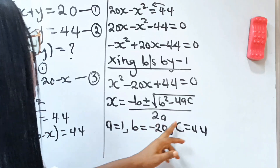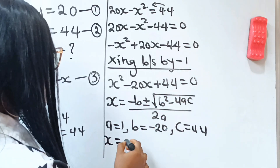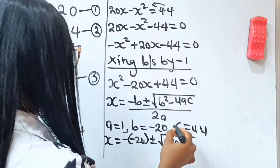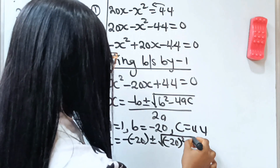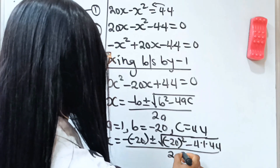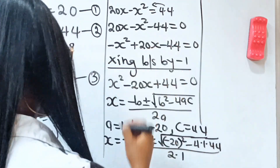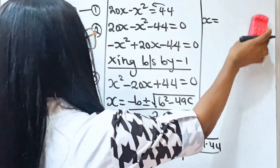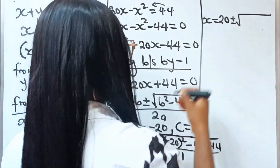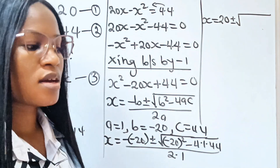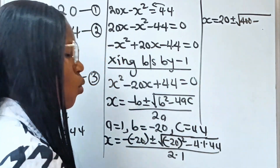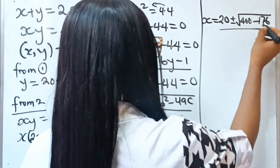Substituting these values, we have x equals negative of negative 20, plus or minus the square root of negative 20 squared minus 4 times 1 times 44, all divided by 2 times 1. Negative times negative gives us plus, so we have plus 20 plus or minus the square root of 400 minus 176, which gives us 224, divided by 2.